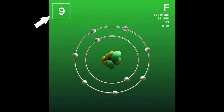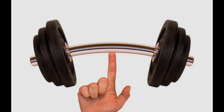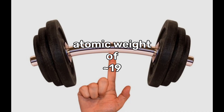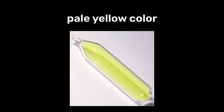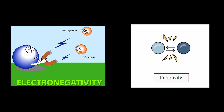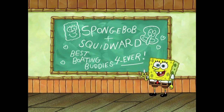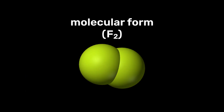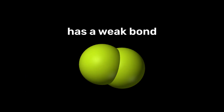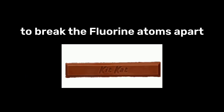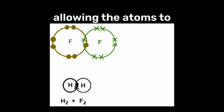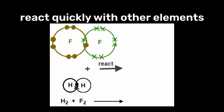Fluorine is the ninth element on the periodic table and the lightest halogen with an atomic weight of only 19. Fluorine sports a pale yellow color and is the most electronegative and reactive of all the elements. One of the reasons fluorine is so reactive is its molecular form has a relatively weak bond, making it easy to break the two fluorine atoms apart, allowing the atoms to react quickly with other elements.